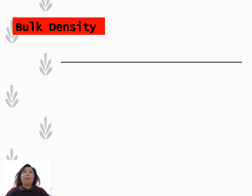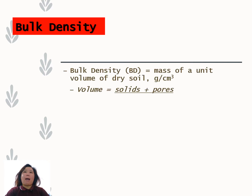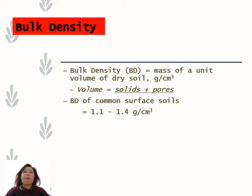Now let's look at bulk density. Bulk density is defined as the mass of a unit volume of dry soil, with the same unit as particle density: grams per cubic centimeter. Unlike particle density, in bulk density the volume includes both the soil solids and the pore spaces. The bulk density of common surface soils ranges from 1.1 to 1.4 g/cm³, while for common subsoils it ranges from 1.3 to 1.7 g/cm³.